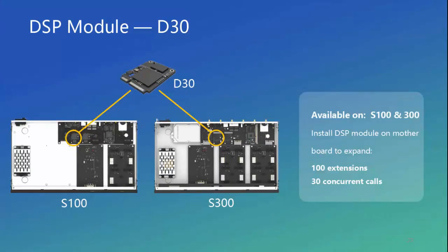The D30 module, or DSP module, can add 100 extensions and 30 concurrent calls on S100 and S300. S100 can add one D30 module and S300 too, making S100 and S300 scalable.